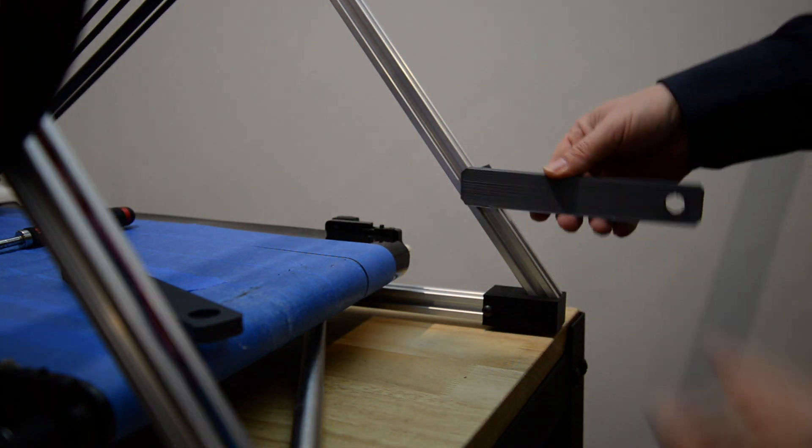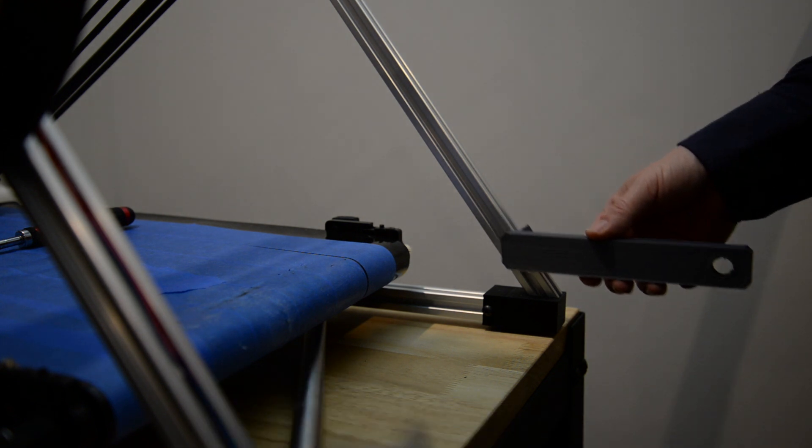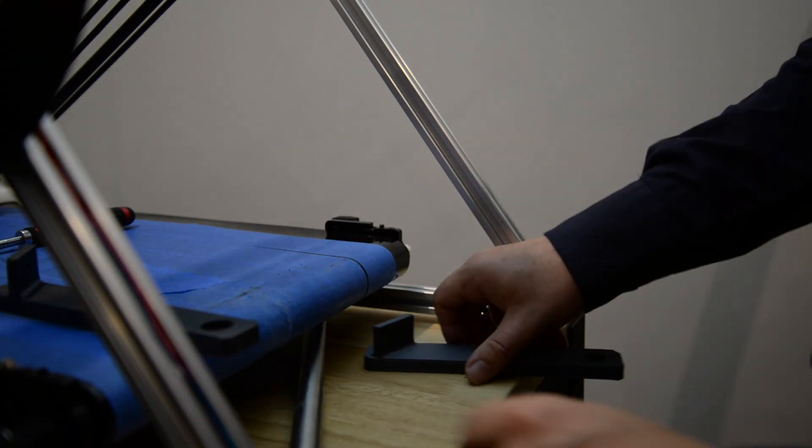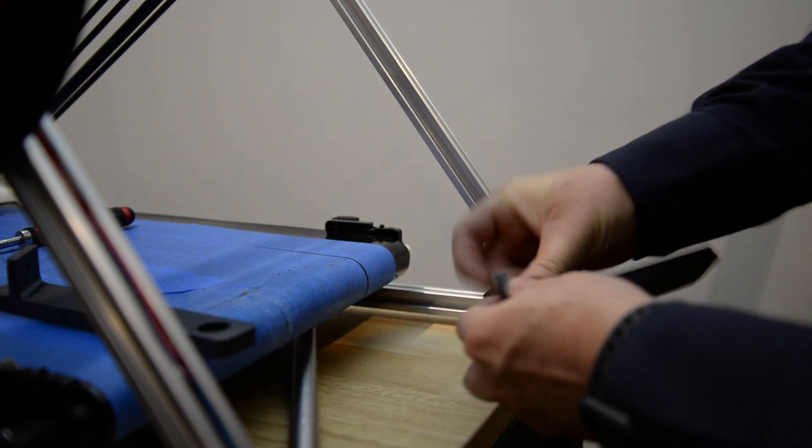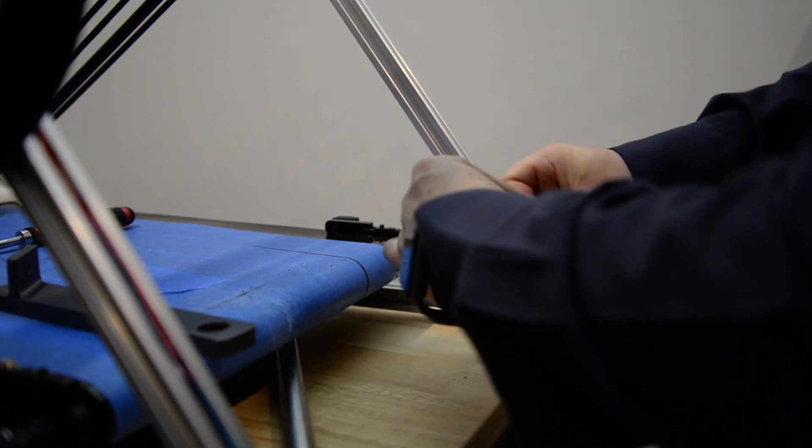So here's the printed parts. The one goes on that side, the other one on this side. And I simply use T-slot nuts to mount them onto the aluminum extrusion beams.